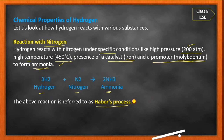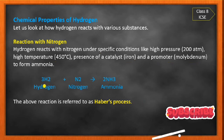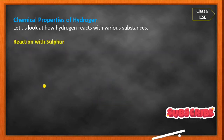Haber's process is a well-known industrial process. In industry, to prepare ammonia, we use Haber's process: hydrogen and nitrogen are reacted under these specific conditions — 200 atmospheric pressure, 450°C, with iron as catalyst and molybdenum as promoter — to produce ammonia.